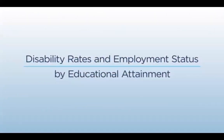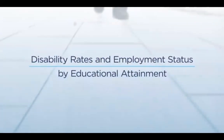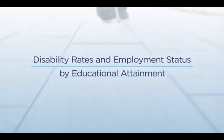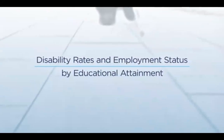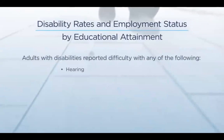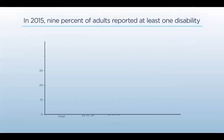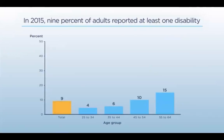A recent analysis in the Condition of Education report from NCES explores how the employment status of persons with disabilities varies by their educational attainment level. Persons were classified as having one or more disabilities if they reported difficulty with any of the following tasks — for example, difficulty seeing even when wearing glasses. Overall, 14.4 million, or 9% of the 25 to 64 year old population, reported at least one of these disabilities in 2015.